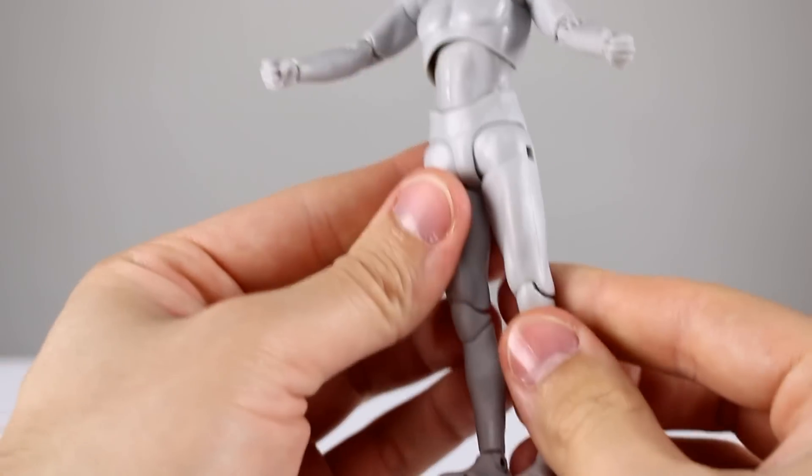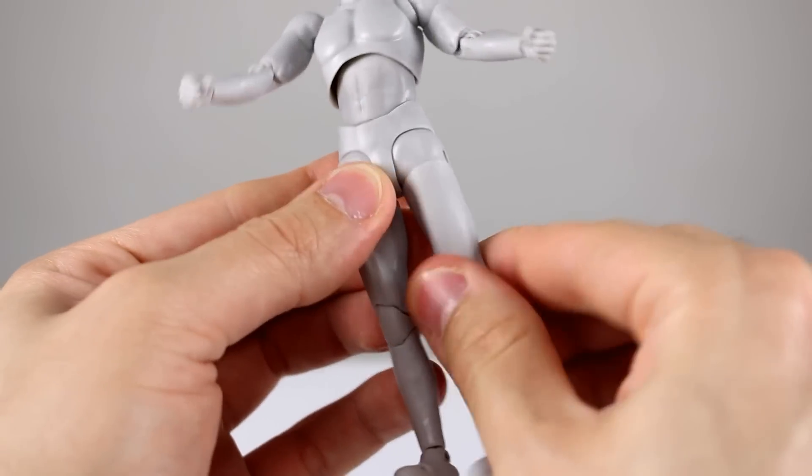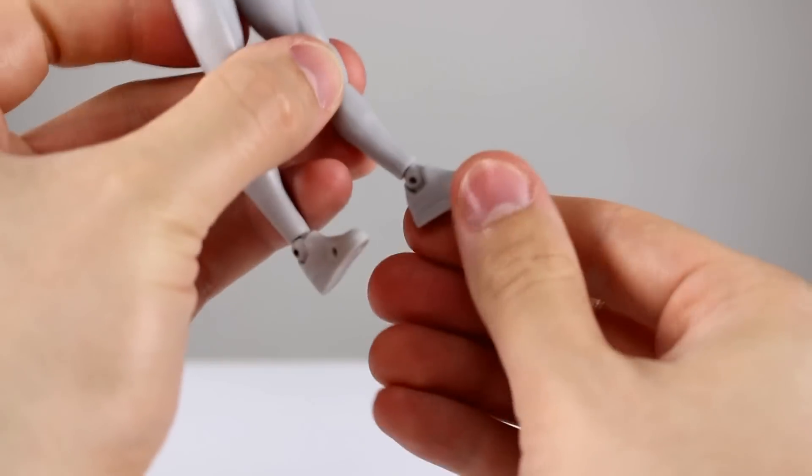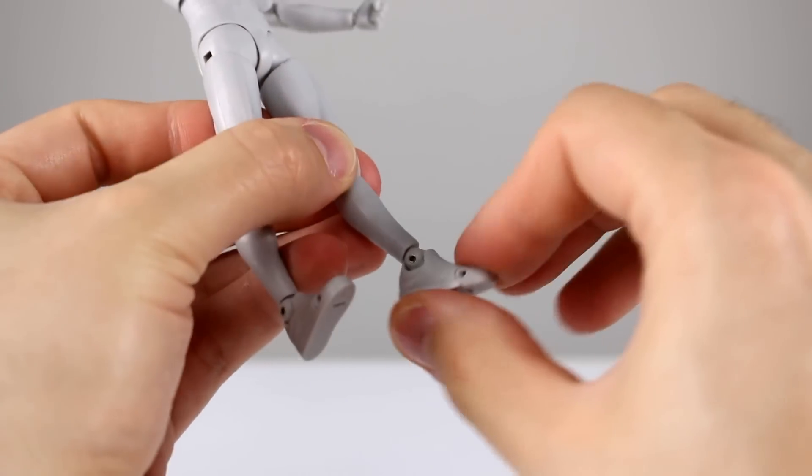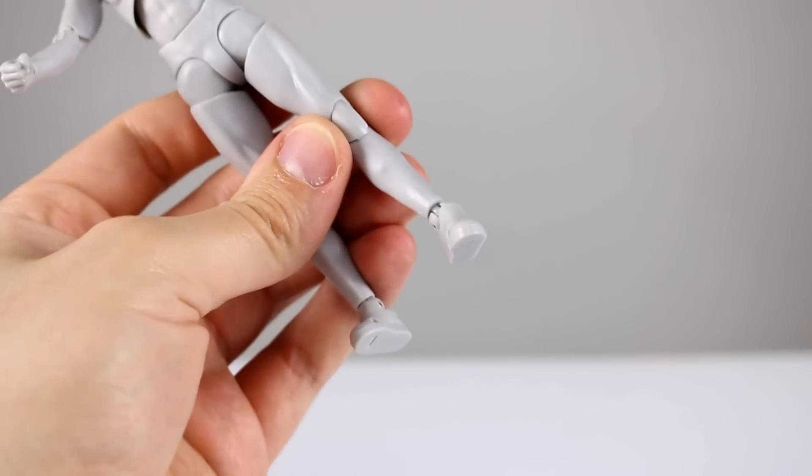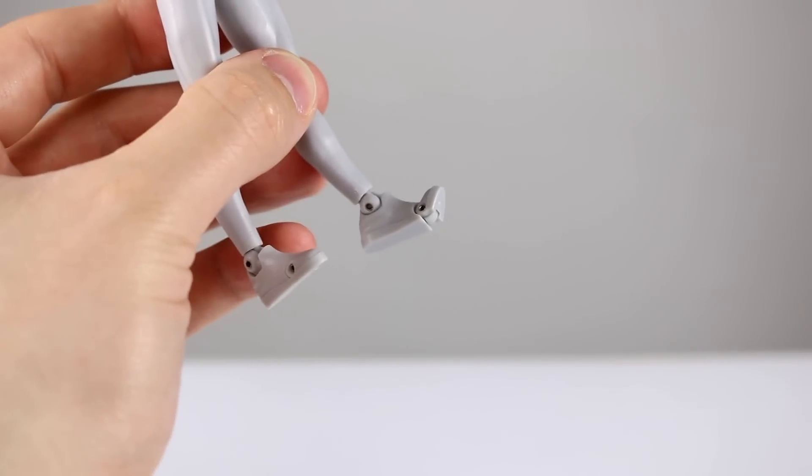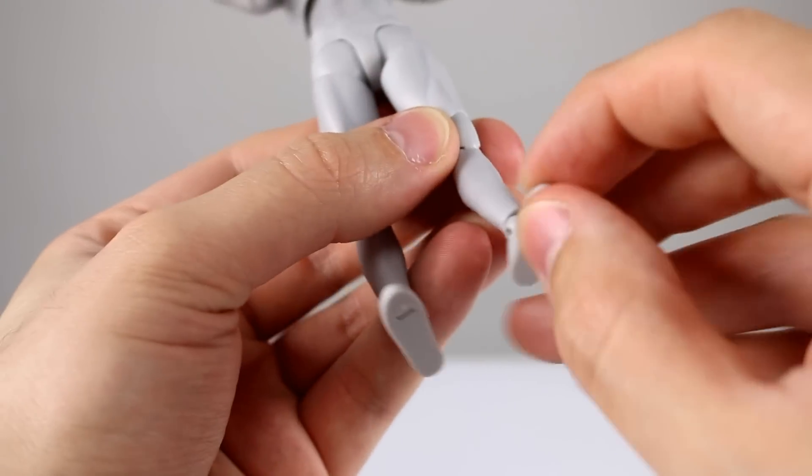You do get a thigh swivel so that's good. Double jointed knees work really well. And then for the ankle it will rotate, it will have the hinge, and it has a proper ankle rocker in there, so that's pretty good. And a toe joint which works pretty well.